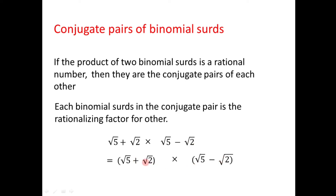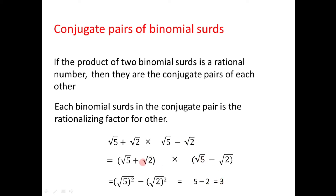Since this is in the form (a + b)(a − b), we can write it as a² − b². So we get (√5)² − (√2)² = 5 − 2 = 3. The result, 3, is a rational number. Since the product of these two binomial surds, √5 + √2 and √5 − √2, is a rational number, we confirm that they are conjugate pairs of each other.